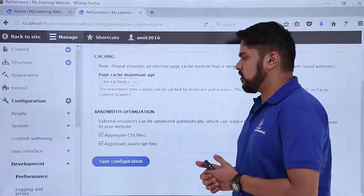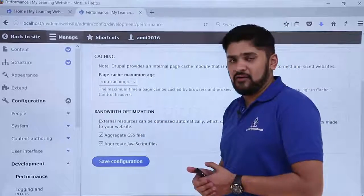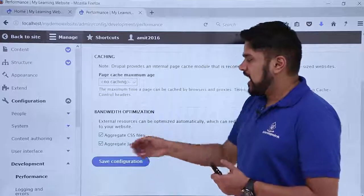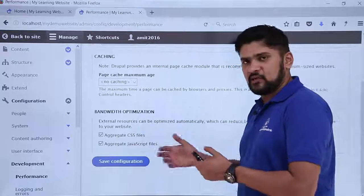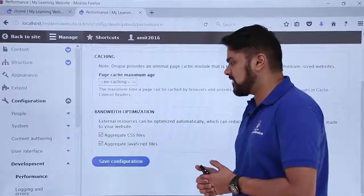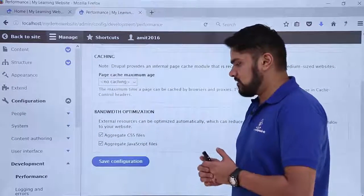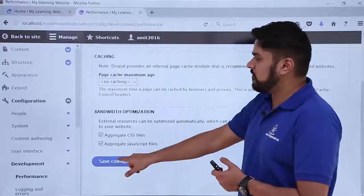Here you can see the bandwidth optimization technique. It means that if you are having large CSS files or JS files you can easily aggregate them. Aggregation means it will optimize it. It will reduce the size of the CSS and JavaScript file which will decrease the size of your website. For that now click on save configuration after doing all the changes.